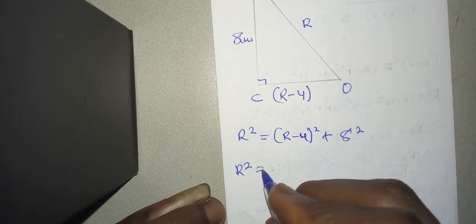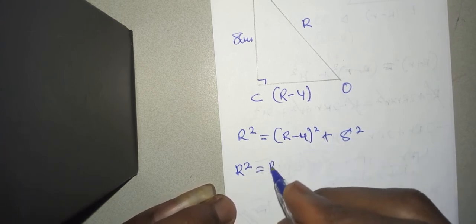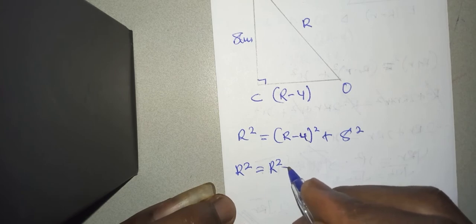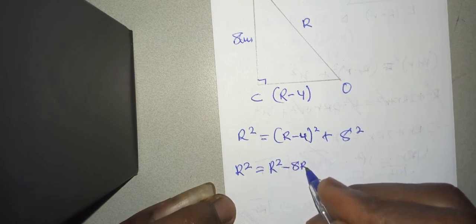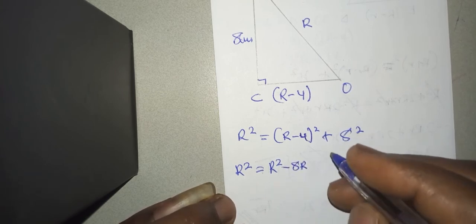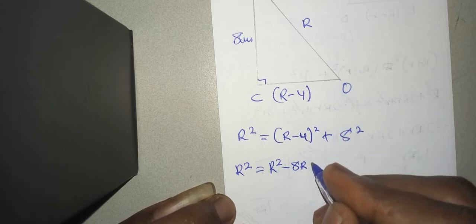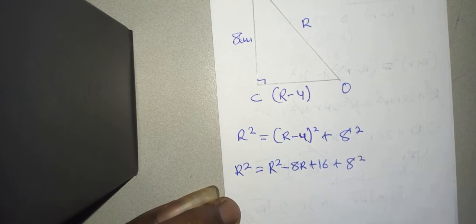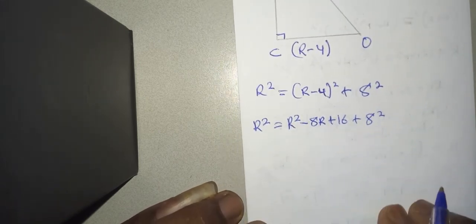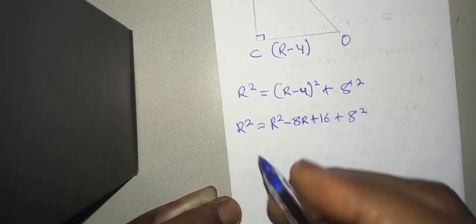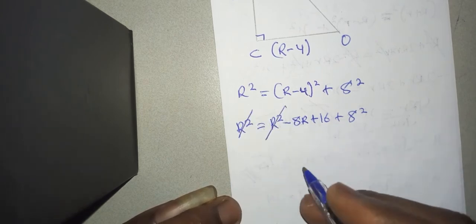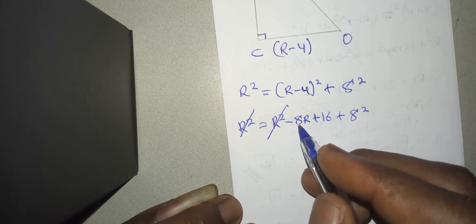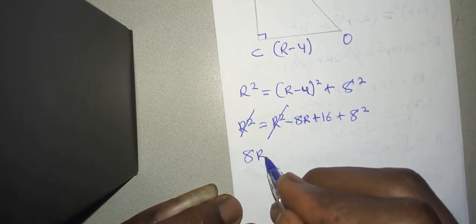So R squared equals R squared minus 8R plus 16, plus 8 squared. Now if you group like terms, this will cancel that. You're going to push this one there - it's negative, when it crosses it becomes positive - so you have 8R.